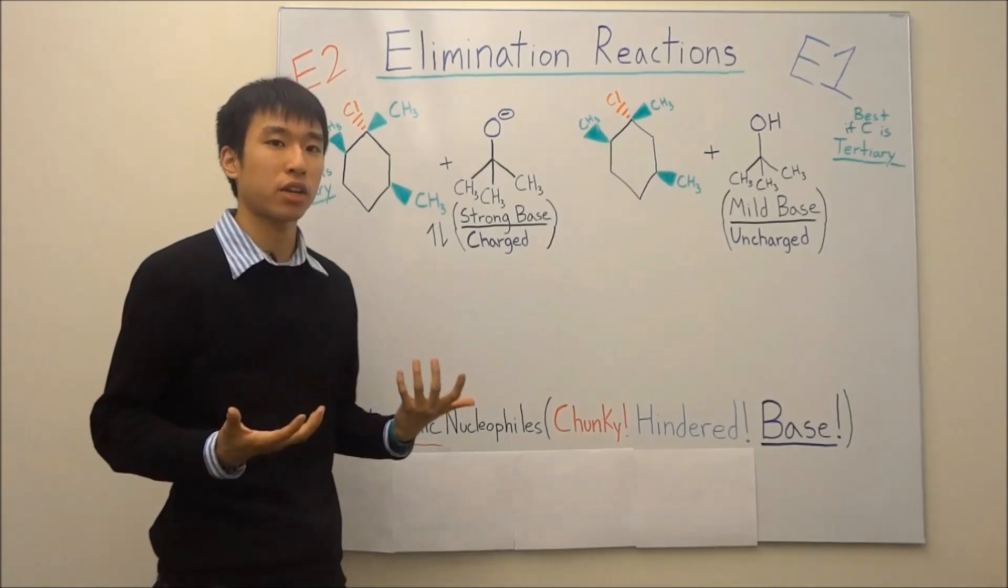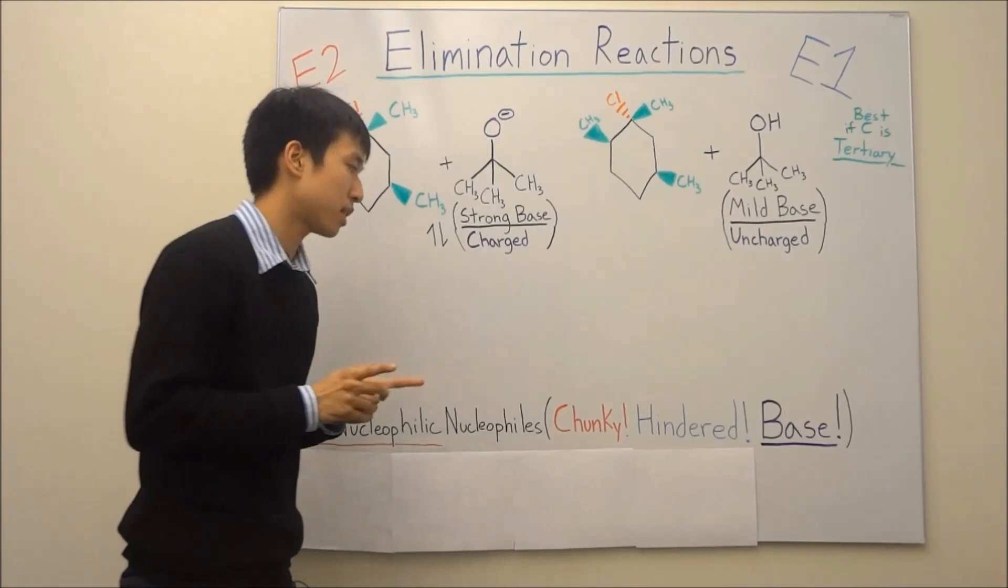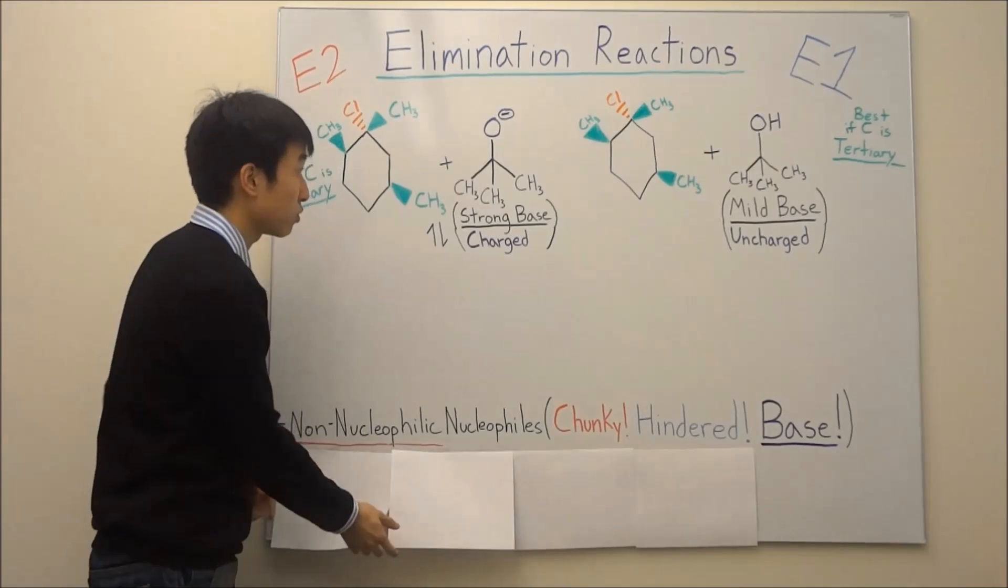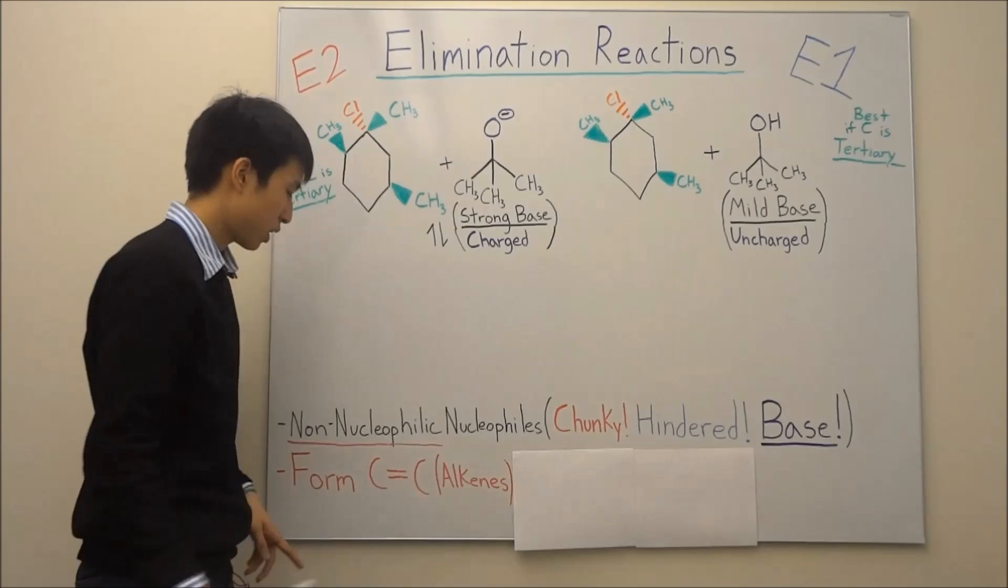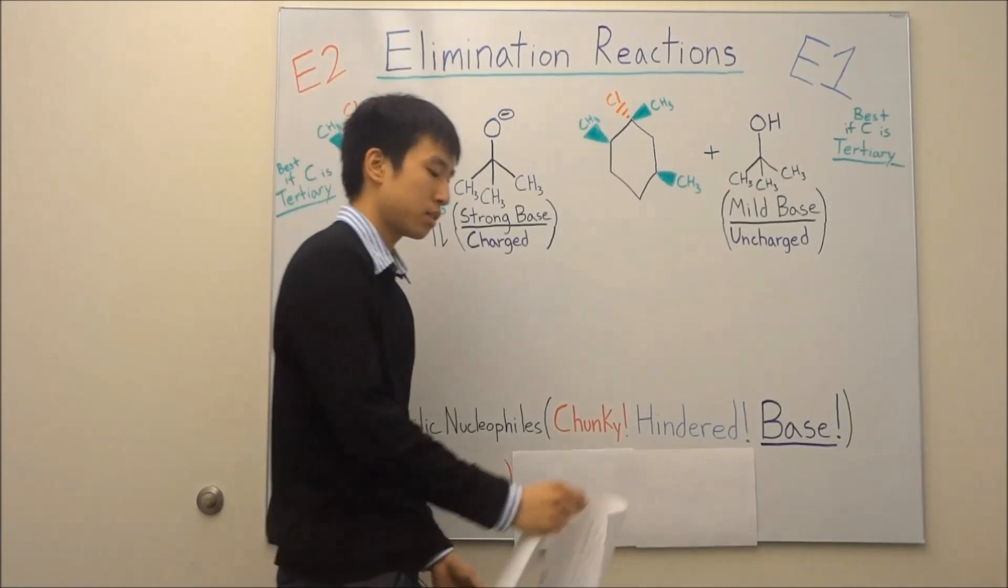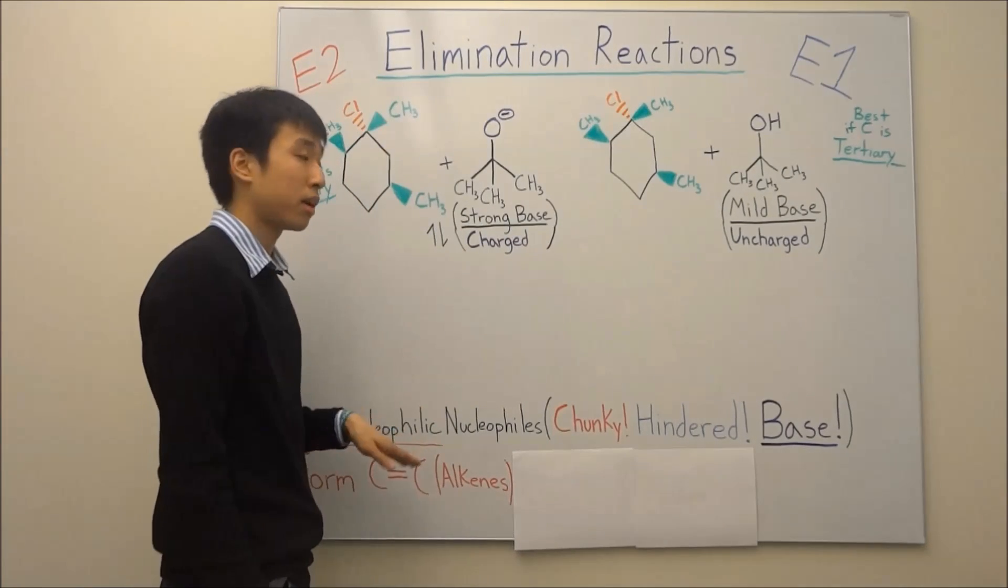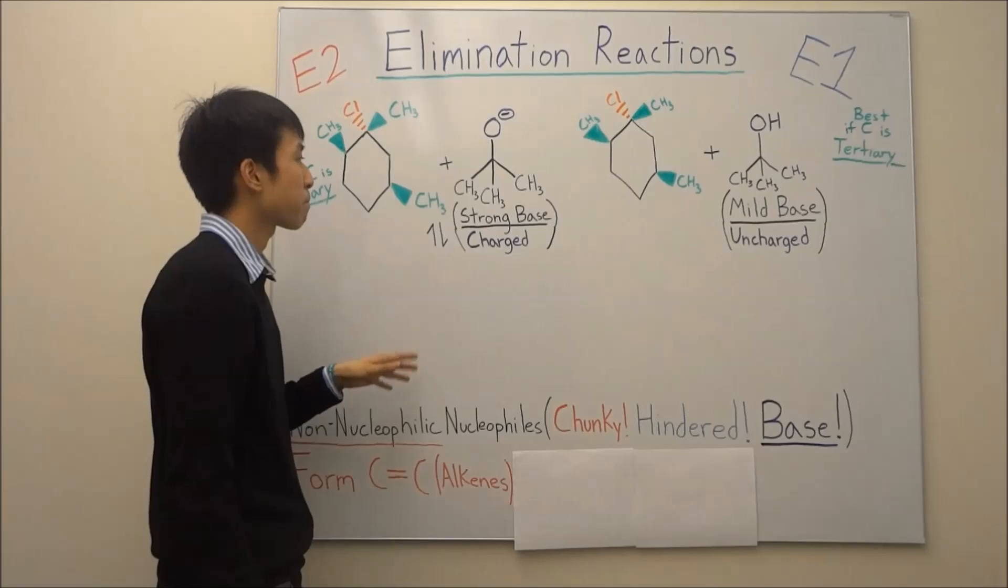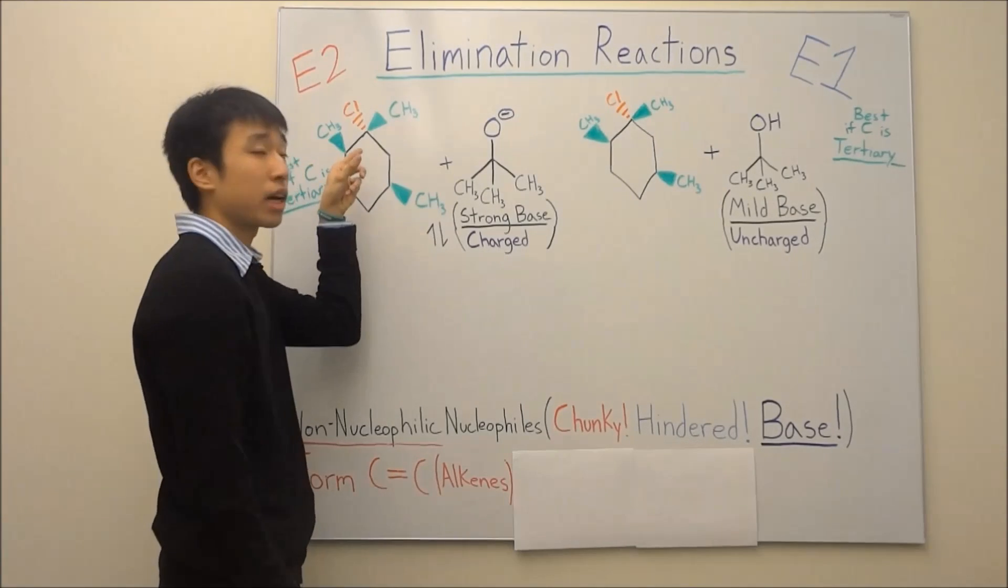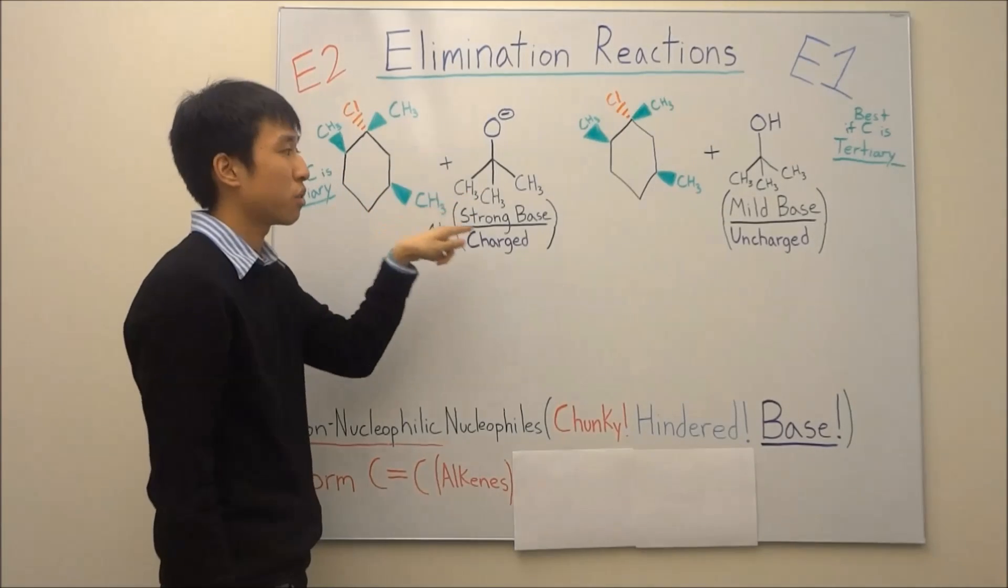For elimination reactions, the goal is no longer to substitute into your molecule, but instead, you're trying to form carbon-carbon double bonds, also known as alkenes. Because you're going to be forming carbon-carbon double bonds, or alkenes, in order to form them, you're going to be kicking out your leaving group and also taking away hydrogen with your bases.